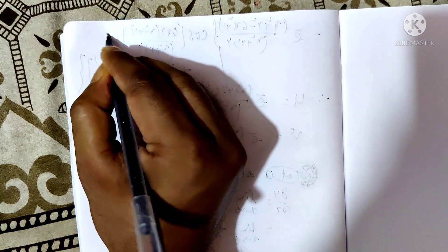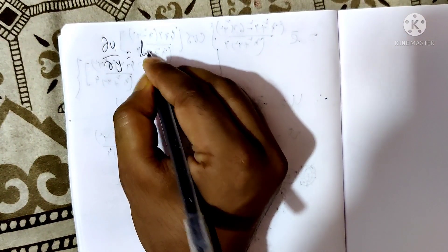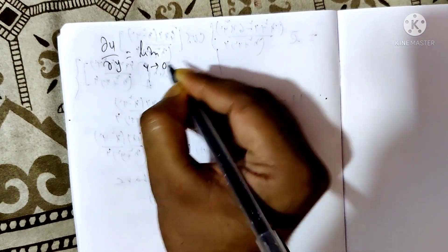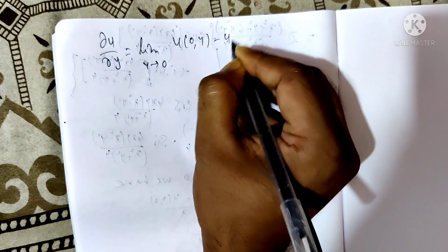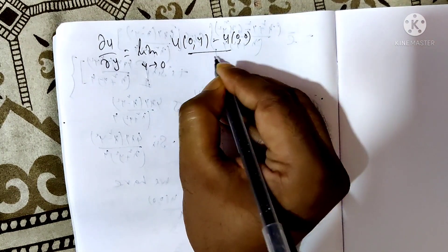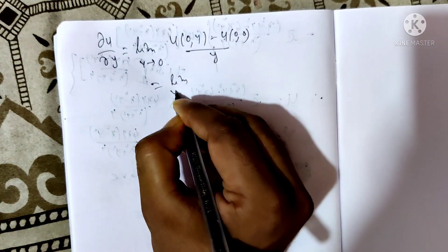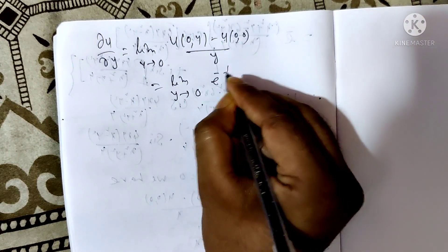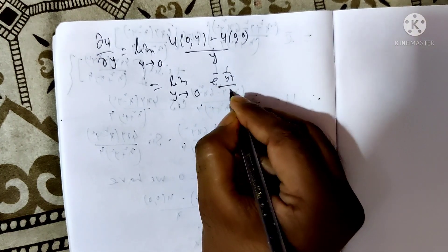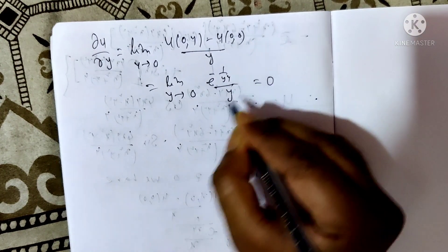∂u/∂y = limit as y→0 of [u(0,y) - u(0,0)] / y = limit as y→0 of e^(-1/y⁴) / y = 0.